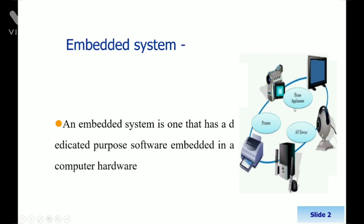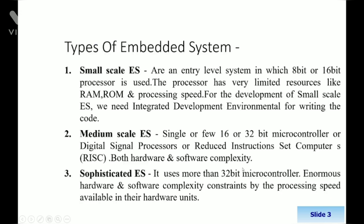Here we can see pictures of home appliances, AV devices, and printers — these are examples of the types of embedded systems. The three types are: small scale embedded systems, medium scale embedded systems, and sophisticated embedded systems.